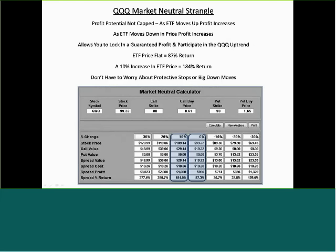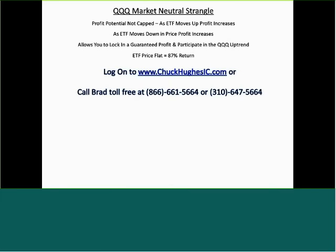A great way to trade options if you want to really reduce your risk is to create these market-neutral spreads. In this example, we set it up and we're guaranteed a minimum profit of 26% no matter what happens. So if you have a profit in an existing trade and you don't know what to do, you create one of these market-neutral trades to guarantee your profit. That concludes my presentation.